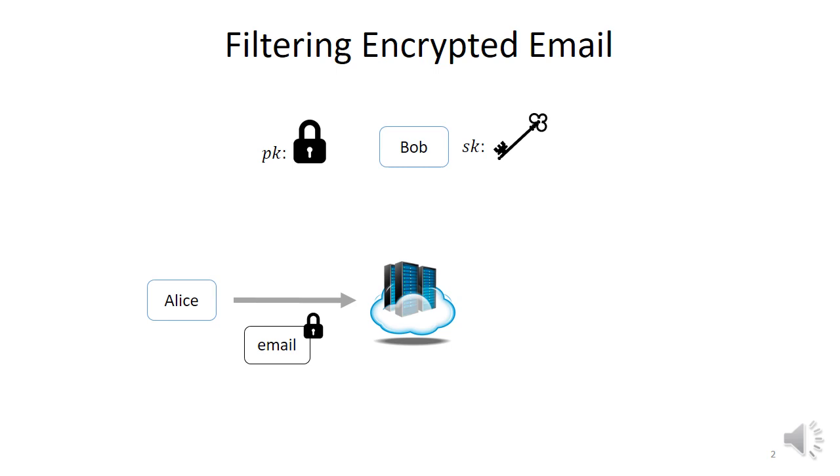First, let me give you some context with an example: filtering encrypted emails. Suppose Alice wants to send some confidential email to Bob. Bob will generate a public key that Alice will use to encrypt the email and an associated secret key that will allow Bob to decrypt and recover the content of the email. But Alice doesn't send the encrypted email directly to Bob, but rather to a server.